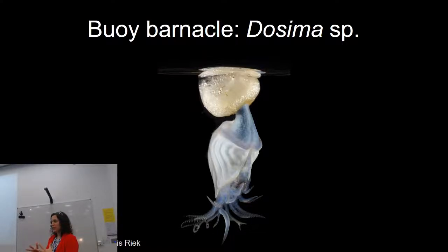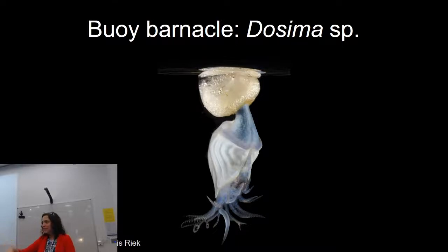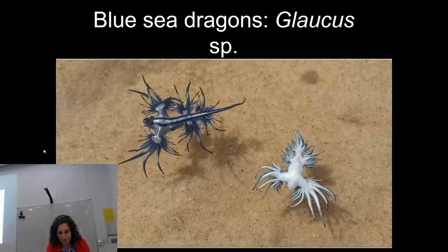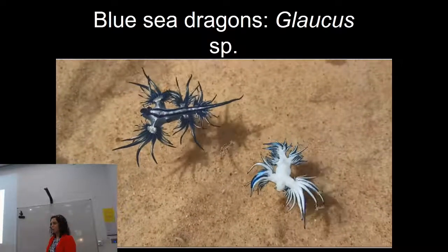There are also buoy barnacles — barnacles that create their own little float. Unlike most barnacles that just filter-feed on rocks, these have spines and eat fish; they're aggressive. Because they make their own float and flap around, they can actually move it a little bit — they have a bit of autonomy compared to other neustonic organisms. They do eat Valella sometimes.